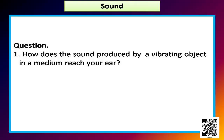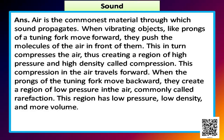Let us now discuss the question given on page 162: How does the sound produced by a vibrating object in a medium reach your ear? Air is the commonest material through which sound propagates. When vibrating objects like prongs of a tuning fork move forward, they push the molecules of the air in front of them. This in turn compresses the air, creating a region of high pressure and high density called compression. This compression in the air travels forward.